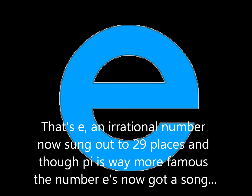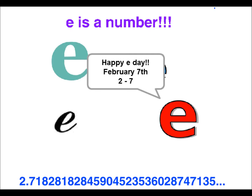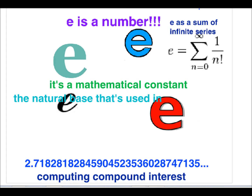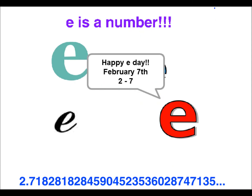The number E's now got a song. 2.7-1-828-1-828-4-5-9-0-4-5-2-3-5-3-6-0-2-8-7-4-7-1-3-5.